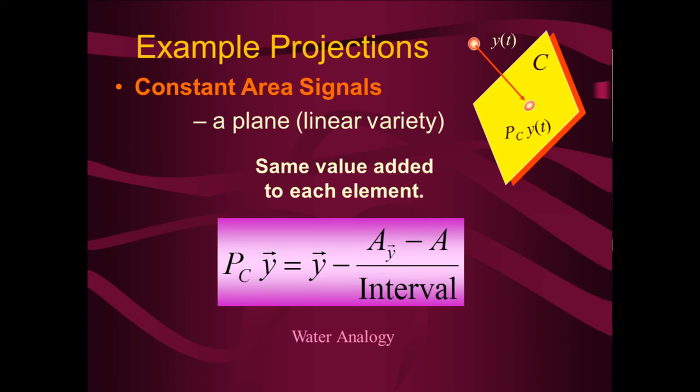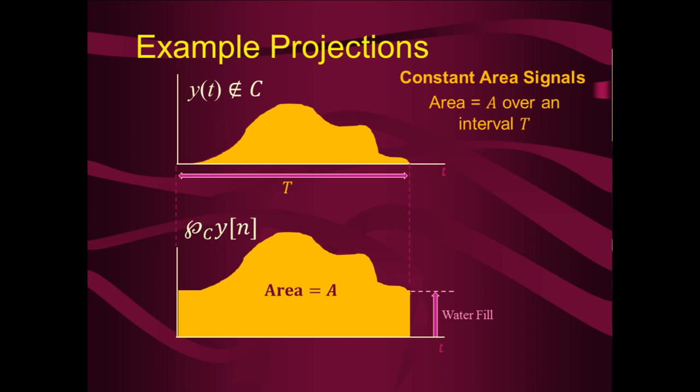This extends to higher dimensions. If we have a point y not in the convex set — the area over a specified interval is not equal to the specified value a — we take the signal and raise or lower it to get the integral equal to the specified value. For example, if the area on top is too small, we fill the tank with water and float it up, adding a DC value over that interval. The signal shape remains exactly the same; we only raise or lower it over the specified interval.